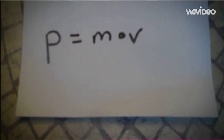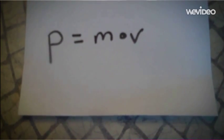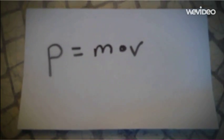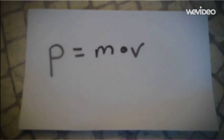Momentum is the quantity of motion of a moving body. The equation for momentum is p equals m times v. p stands for momentum, m stands for mass, v stands for velocity.